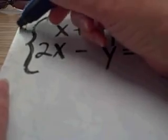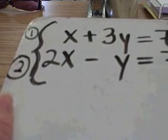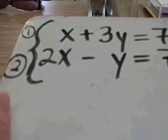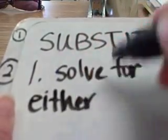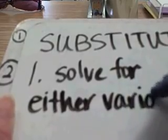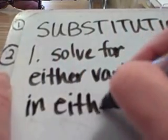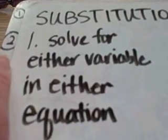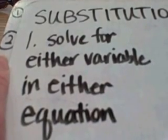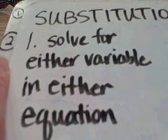I usually number my equations, equation number one and equation number two, so that I can communicate with you about which equation I'm talking about. The first step of the substitution method is solve for either variable in either equation. A lot of students assume that you must solve for y, but that's not the case.